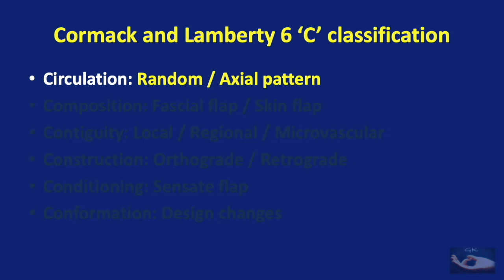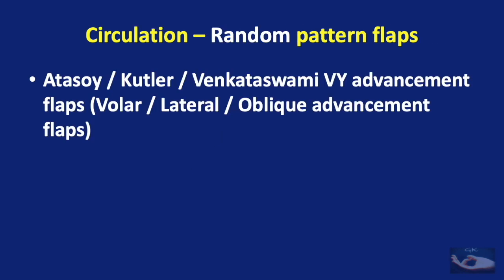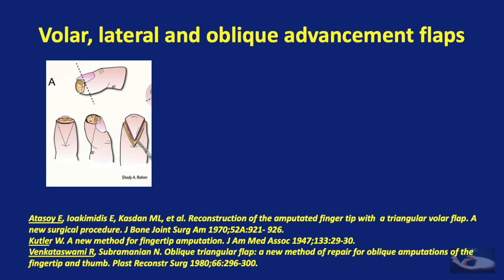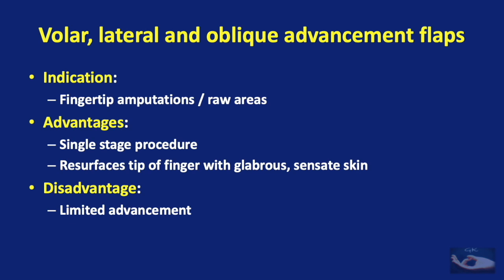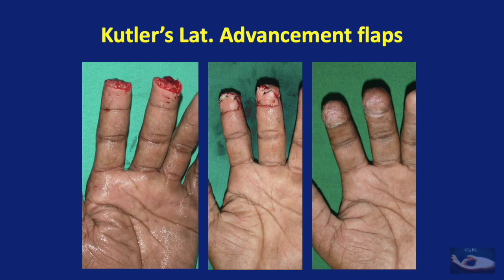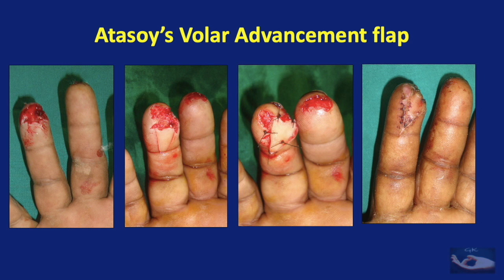The first classification is based on circulation — random pattern or axial pattern. Good examples of random pattern flaps are the Atasoy, Cutler, or Venkataswamy VY advancement flaps. These volar, lateral, and oblique advancement flaps are based on a random blood supply in the subcutaneous tissue, which serves as the pedicle. They are typically indicated for fingertip amputations or raw areas — single stage procedures resurfacing fingertips with glabrous, sensate skin, but with limited advancement. Cutler's lateral flaps are ideal for transverse amputations, while the Atasoy volar flap suits dorsal-facing oblique amputations.